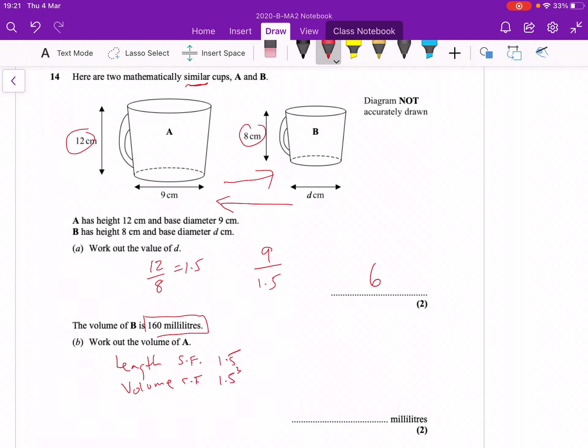So it is 1.5 cubed that is going to need timesing by 160, and that answer comes out to be 540.